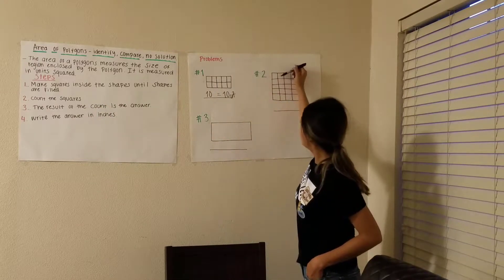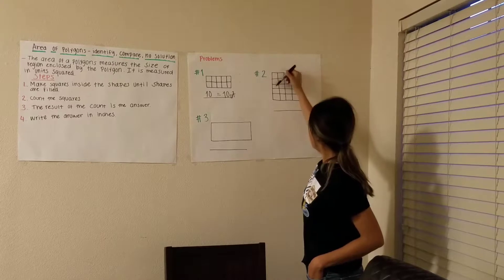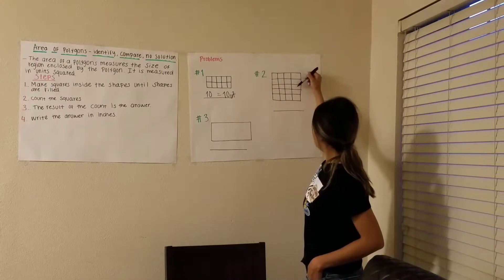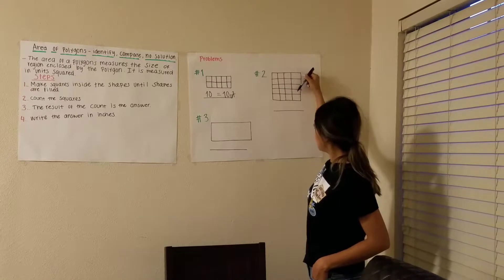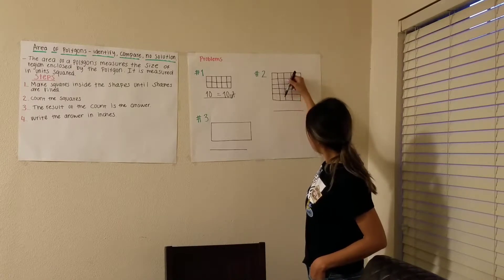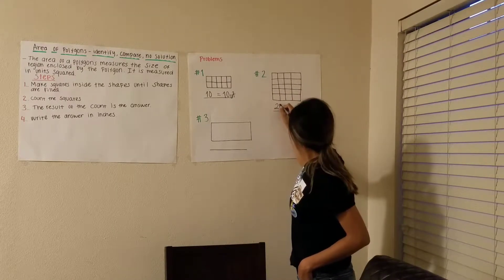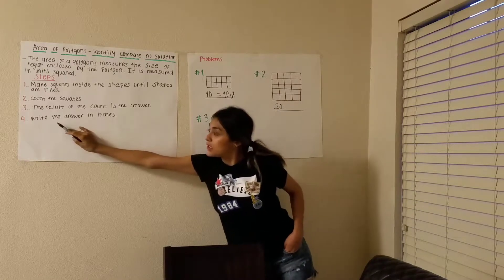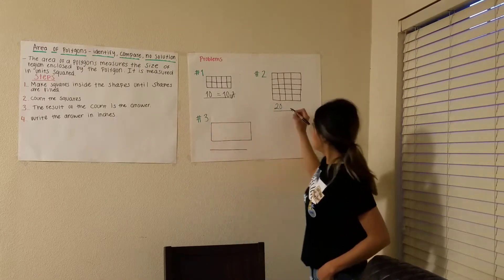One, two, three, four, five, six, seven, eight, nine, ten, eleven, twelve, thirteen, fourteen, fifteen, sixteen, seventeen, eighteen, nineteen, twenty. Step four: write the answer in inches.